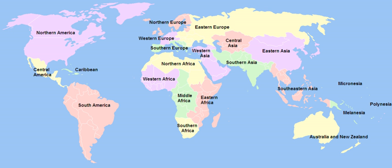The United Nations Geoscheme is a system which divides the countries of the world into regional and subregional groups. It was devised by the United Nations Statistics Division based on the M49 coding classification.